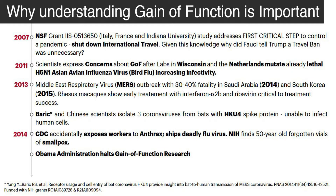In 2011 we had a disaster when viruses leaked from the University of Wisconsin and the Netherlands, because they were doing gain-of-function research with an influenza virus. In 2013, MERS — also a coronavirus with 30-40% mortality — emerged, and Baric with Chinese scientists admitted to working with the HKU4 spike protein. In 2014, NIH had a smallpox leak, and the Obama administration temporarily shut down gain-of-function, though research money seemed to make its way to Peter Daszak's EcoHealth anyway.